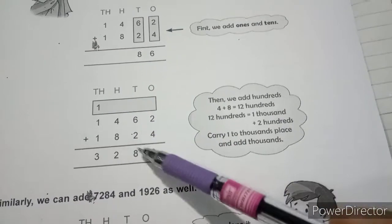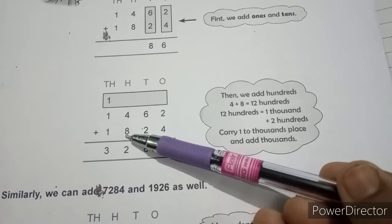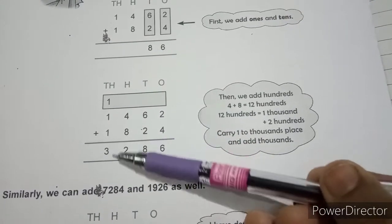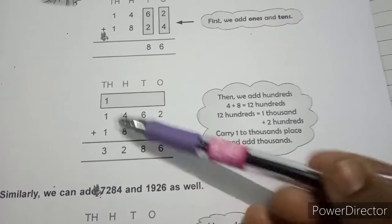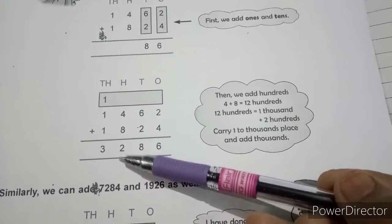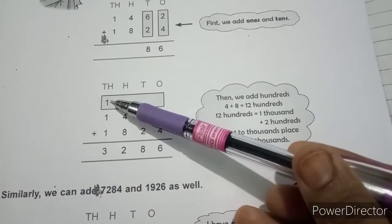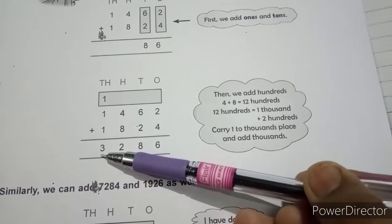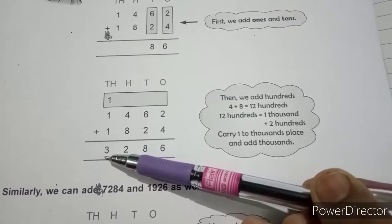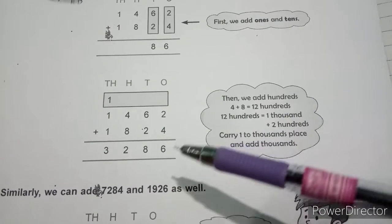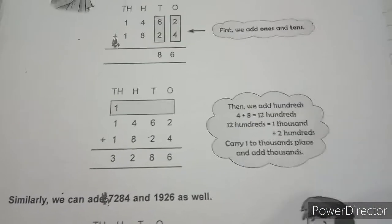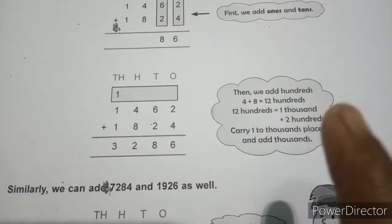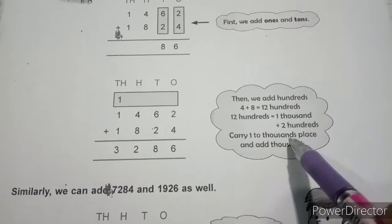We carry 1 to the thousands place and write 200. Then 1 plus 1 plus 1 is equal to 3000. This is the reason that we need to understand this. It is not just that it has been carried, but why are we carrying it? What is the reason behind it? This is very important because you are in class 3 now. Anybody can ask you this question.